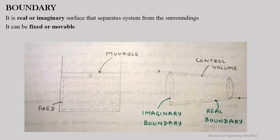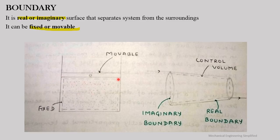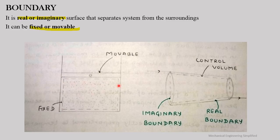The surface which separates the system and its surroundings is known as the boundary. It can be real or imaginary, and also fixed or movable. In a piston-cylinder arrangement, the boundary near the fixed cylinder is a fixed boundary, while the boundary close to the movable piston is a movable boundary — it moves up and down as the piston moves.